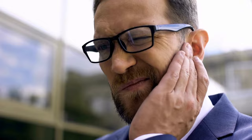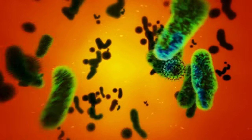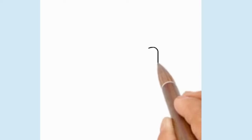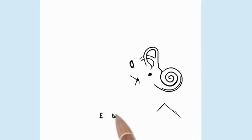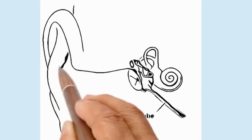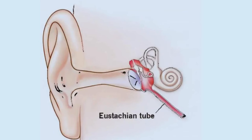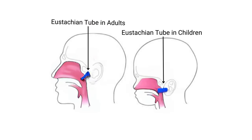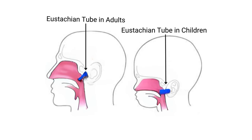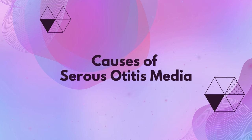The presence of effusion can also create an environment conducive to infections, leading to acute otitis media if bacteria or viruses grow in the accumulated fluid. Proper eustachian tube function is therefore essential for the health of the middle ear and for maintaining optimal auditory performance. However, in children, this tube is shorter, narrower, and more horizontal than in adults, which makes it more prone to dysfunction and blockage. Various factors can cause this dysfunction. Upper respiratory infections can inflame and block the eustachian tube, and allergies can have the same effect.